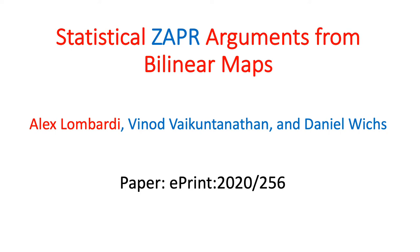Hey everyone, I'm Alex and I'll be presenting joint work with Vinod and Daniel on constructing statistical ZAPIR arguments from bilinear maps. ZAPIR is a term that we invented in this paper, but suffice it to say for now that it's a particularly nice form of two-message witness indistinguishability. The paper is freely available on ePrint at the link on the slide, so let's get started.